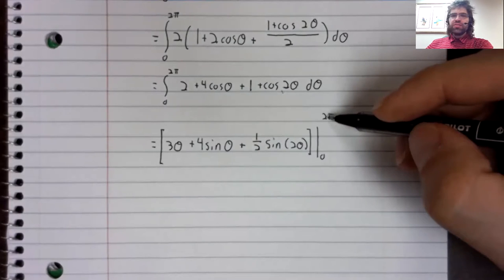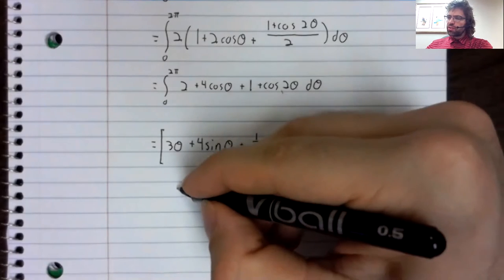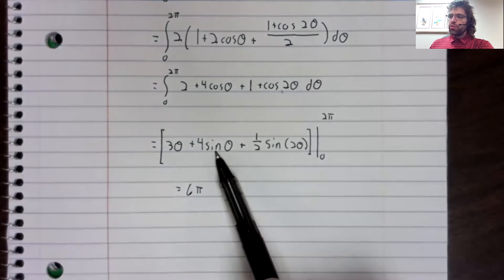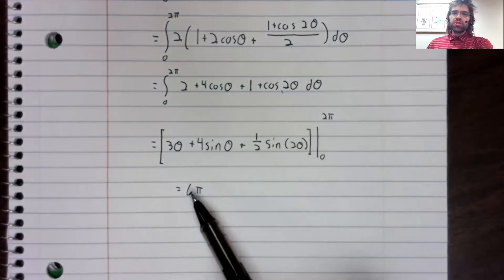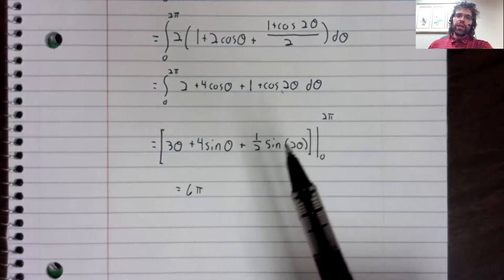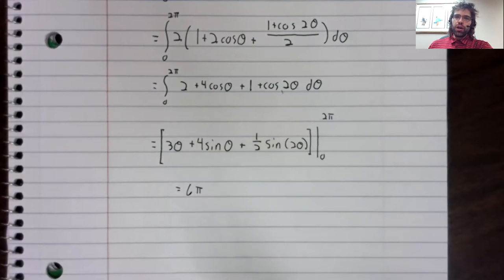And when we stick two pi in, this becomes six pi. The sine of two pi and the sine of four pi are both zero, so this is the only non-zero term. Stick zero in, we get zero, zero, zero. So the area of this figure is six pi.